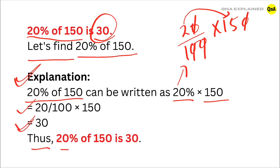Thus, 20% of 150 is equal to 30. So our answer is 30.